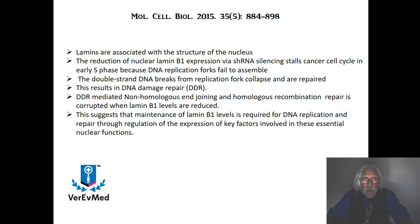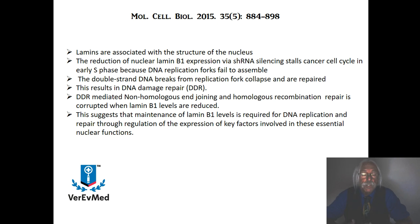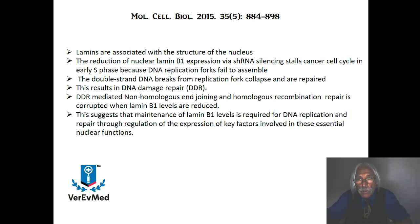Using the homologous recombination DDR repair, we notice that it becomes corrupted when Lamin B1 is reduced. Not only do you get cell cycle arrest — the big picture — but when you look more closely, that DDR isn't working. If that's not working, you're not getting repair, you're introducing mutations, the cell can't carry out replication with fidelity. So the cell dies. If it's a cancer cell, that's exactly what you want.